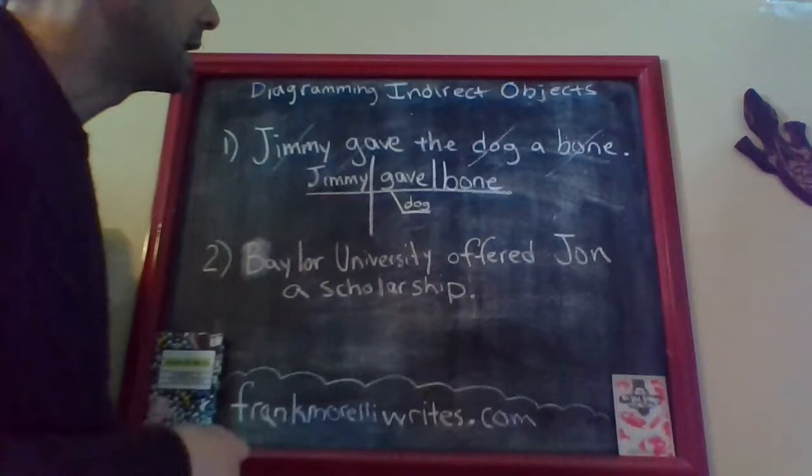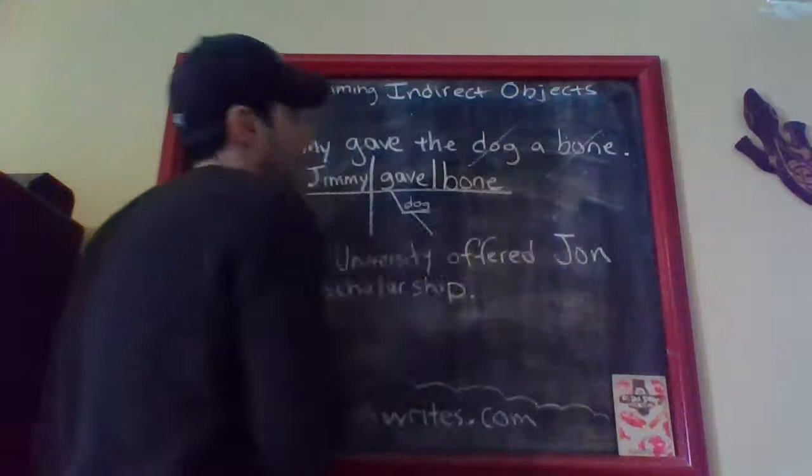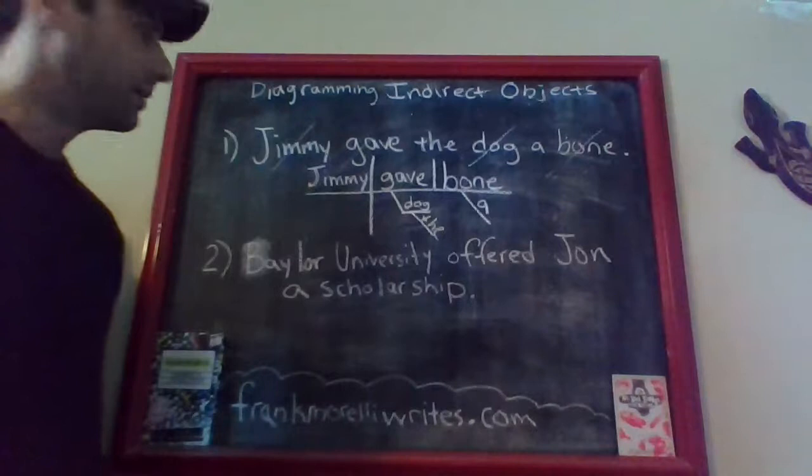Those two remaining words describe or tell us more about the words next to them — 'which dog?' the dog; 'which bone?' a bone. That sounds like adjectives, and they are actually articles that are treated like adjectives. To write an article or adjective on a diagram, find the word they're attached to, draw a slanted line off that word, and put the article on it. So 'the' gets a slanted line off 'dog,' and 'a' gets a slanted line off 'bone.'